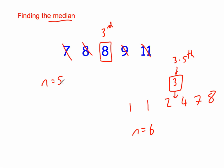So to go from the number of numbers to the median, we use the formula (n + 1) ÷ 2. Let's test it: 5 plus 1 is 6, half of it is the 3rd number. If there are six numbers, add 1 to get 7, half of it is the 3.5th number. So to find the median quickly from a list of numbers, we use the formula (n + 1) ÷ 2.